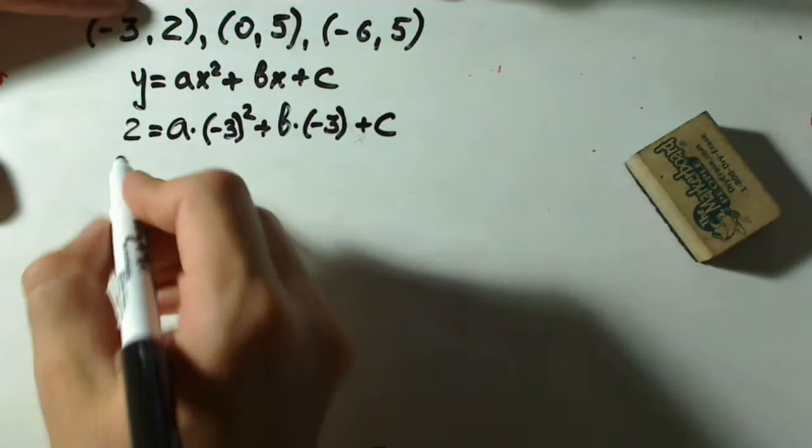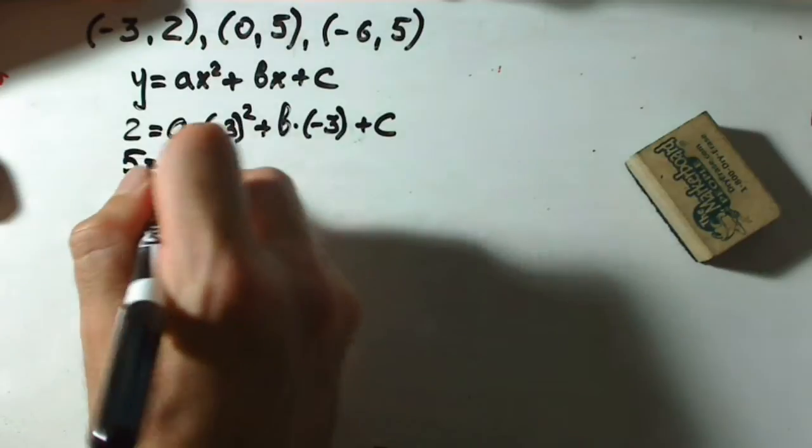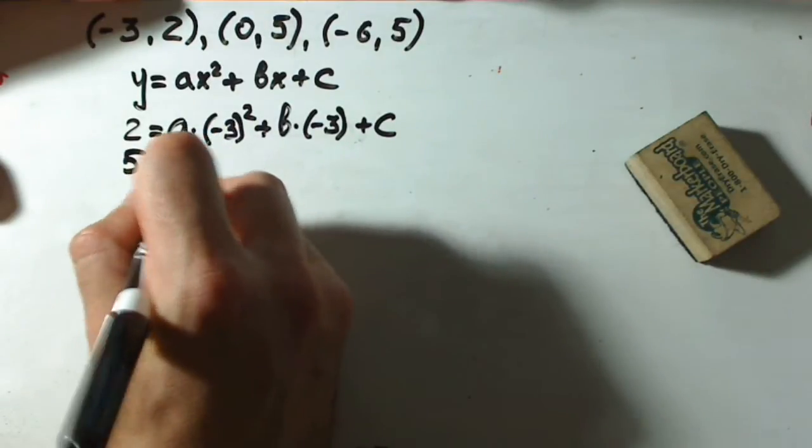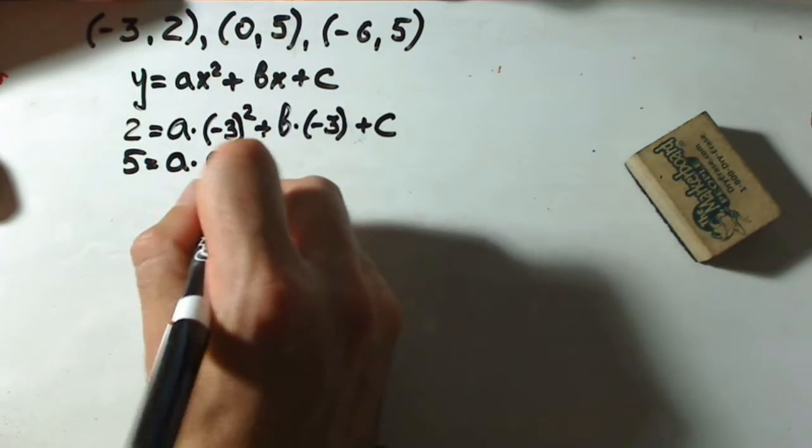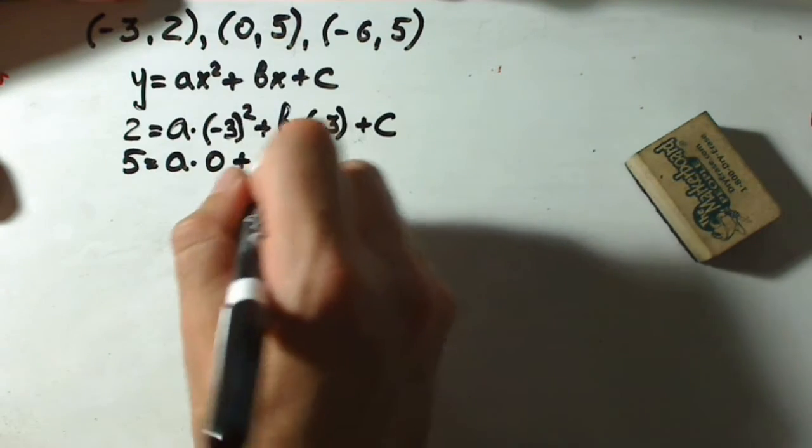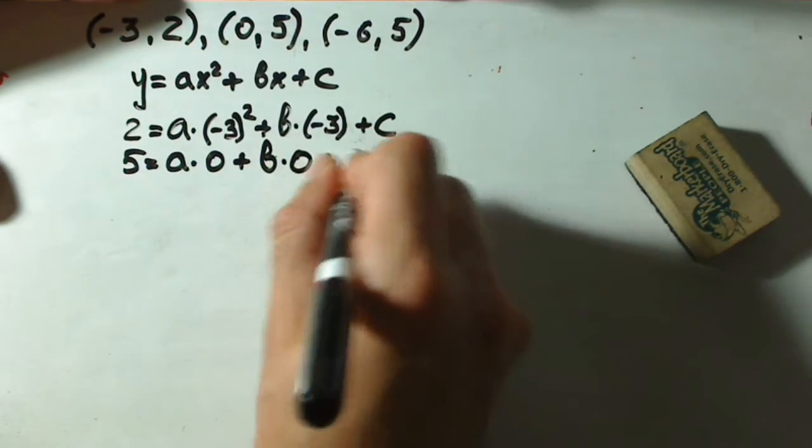Next point is 0, 5. 5 is y, our x value is 0, a times 0 squared, we don't have to write it squared, plus bx which is 0, plus c.